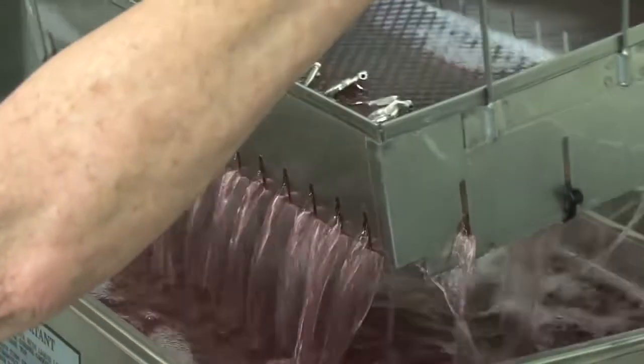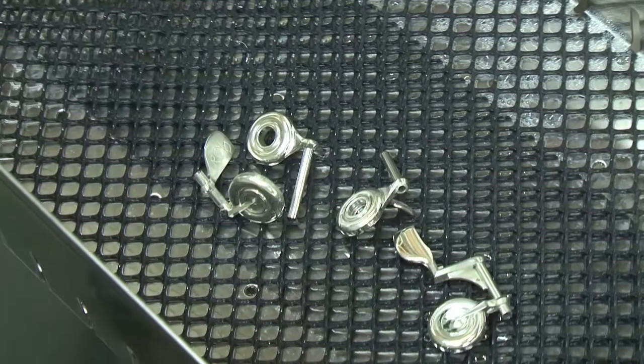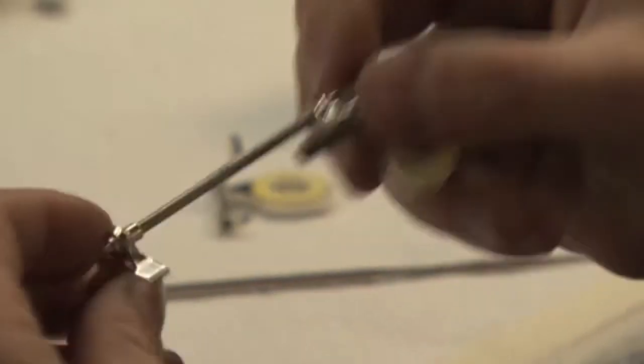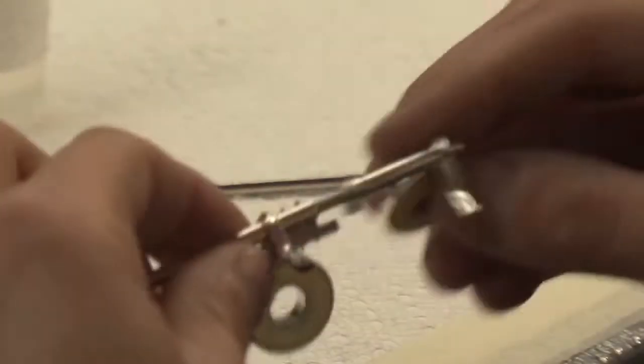Polishing compound is removed in an ultrasonic cleaner. The keys are dried, oiled, assembled in line, and checked for perfect operation.